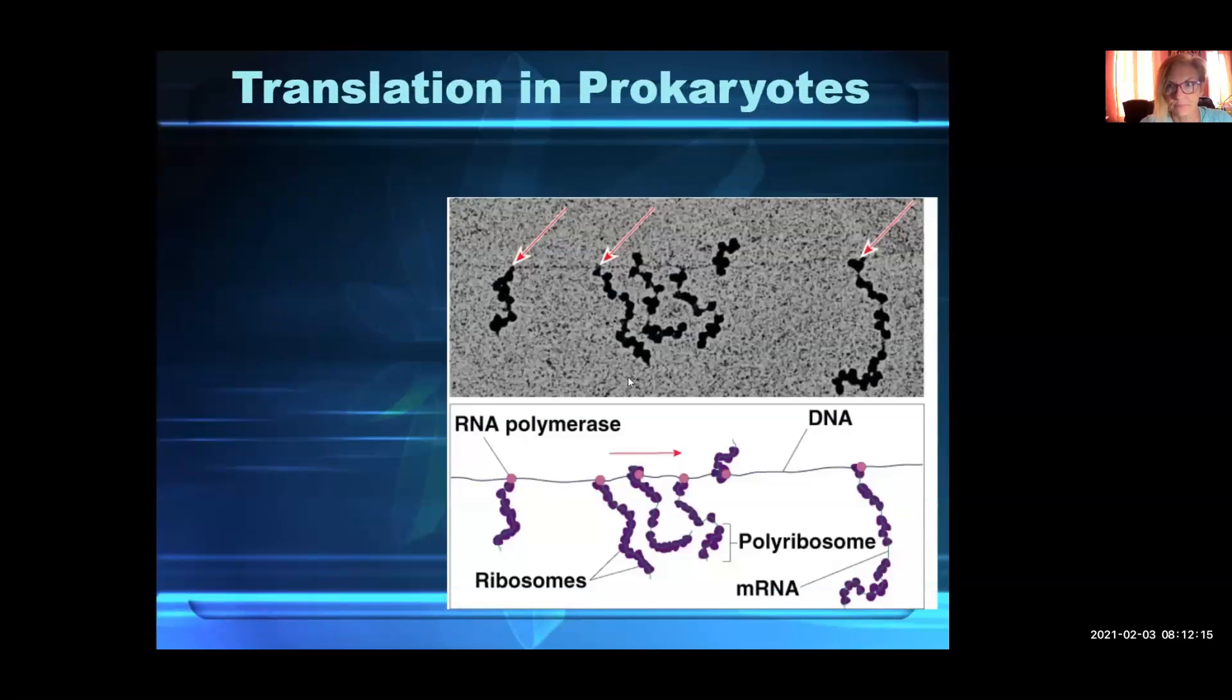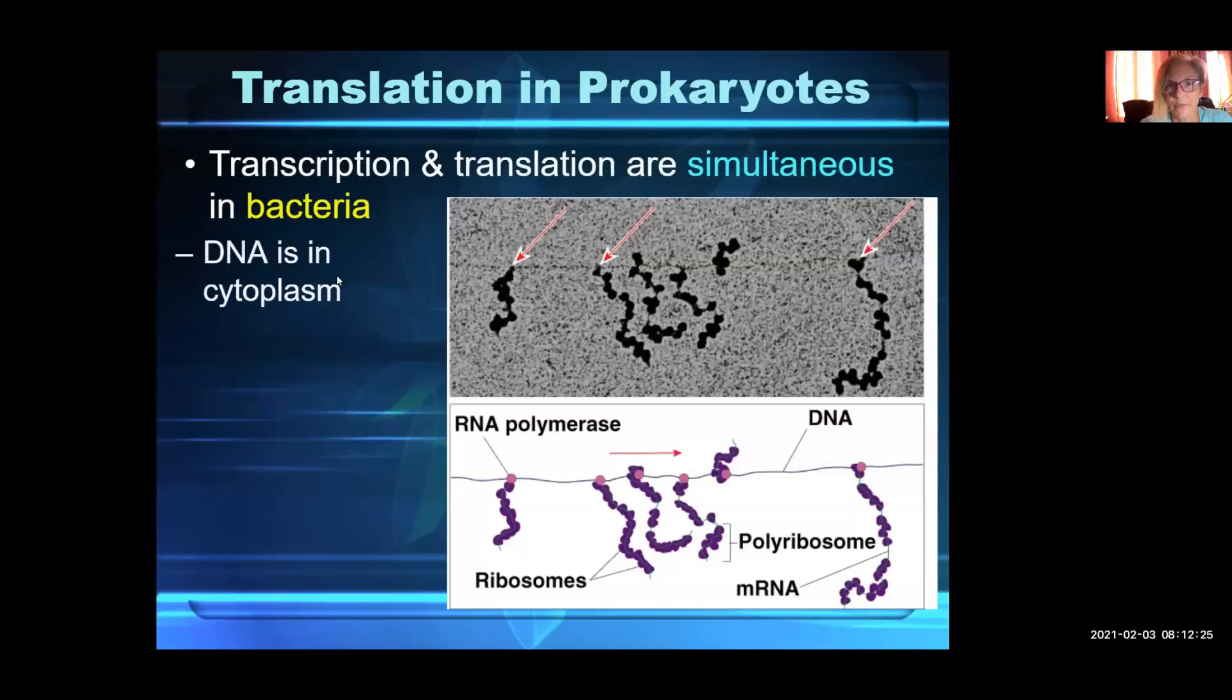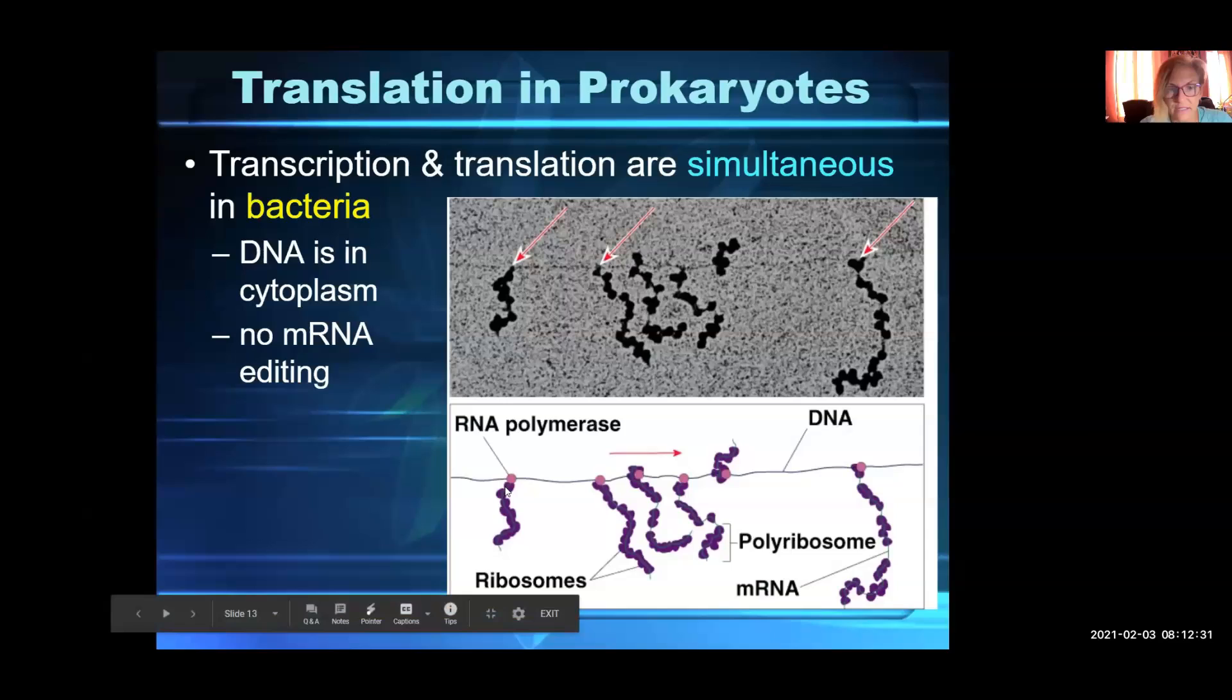This is a picture of prokaryotes. Translation happens a little bit differently because this is your DNA and your transcription is happening, and translation connects directly to the mRNA as it is being transcribed. As the mRNA is forming, the ribosomes attach to that mRNA and directly produce the polypeptide chain from that.